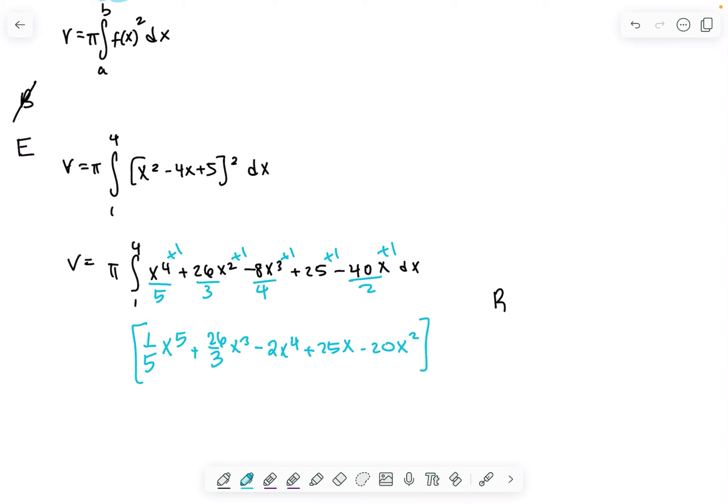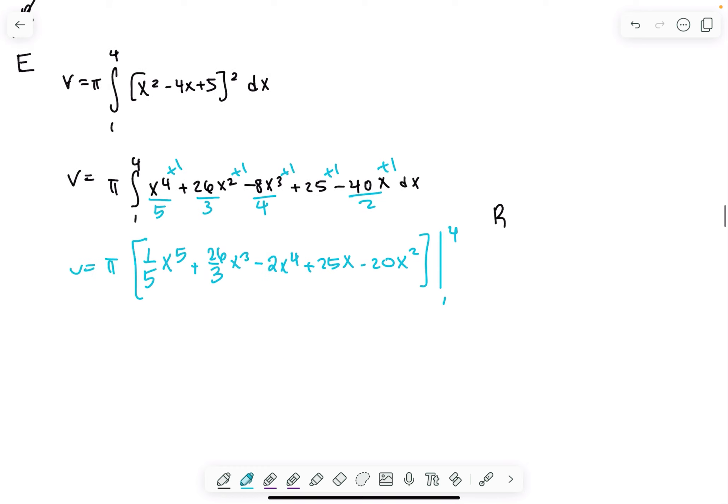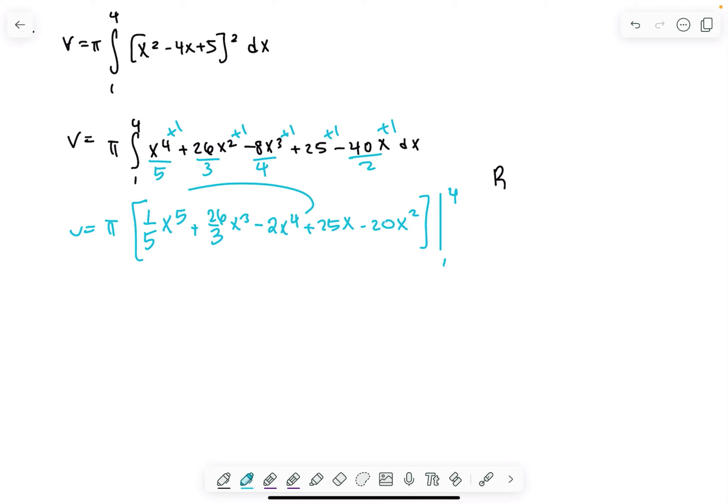We're taking this whole thing, multiplying by π, and evaluating from 1 to 4. The fundamental theorem of calculus says take this, plug in 4, then minus this with 1 plugged in.